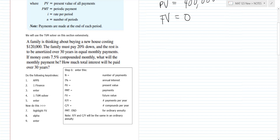A family is thinking about buying a new house costing $120,000 — good luck finding a house in Denver that cheap, you probably can't find anything for less than $300,000 now. The family must pay 20% down and the rest is to be amortized over a 30-year mortgage with equal monthly payments compounded monthly. The interest rate given is 7.5%, which is a high rate — the best mortgage rates now are around 3%.